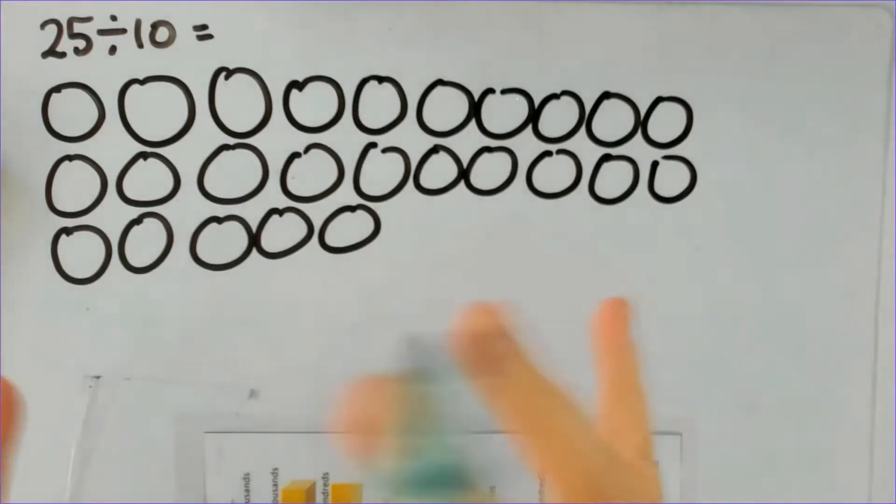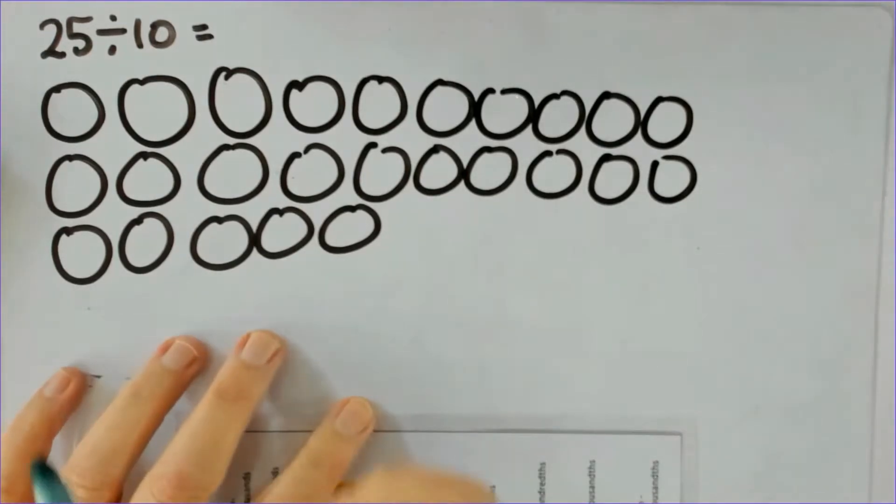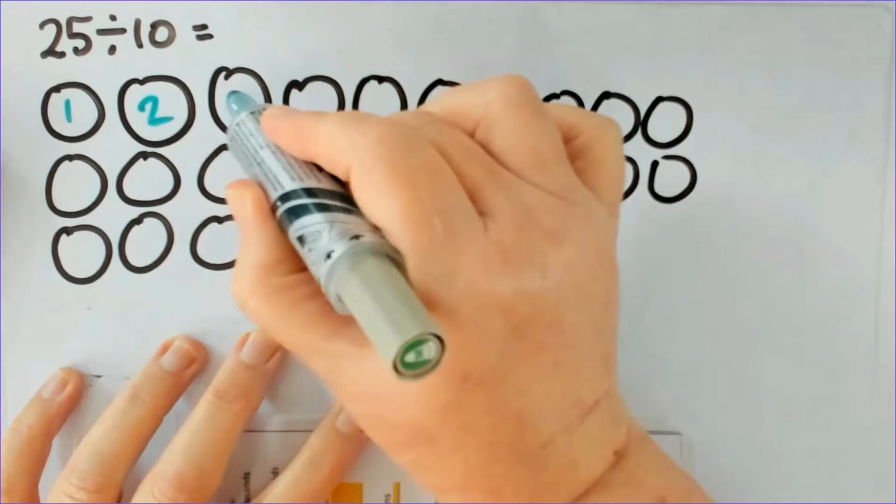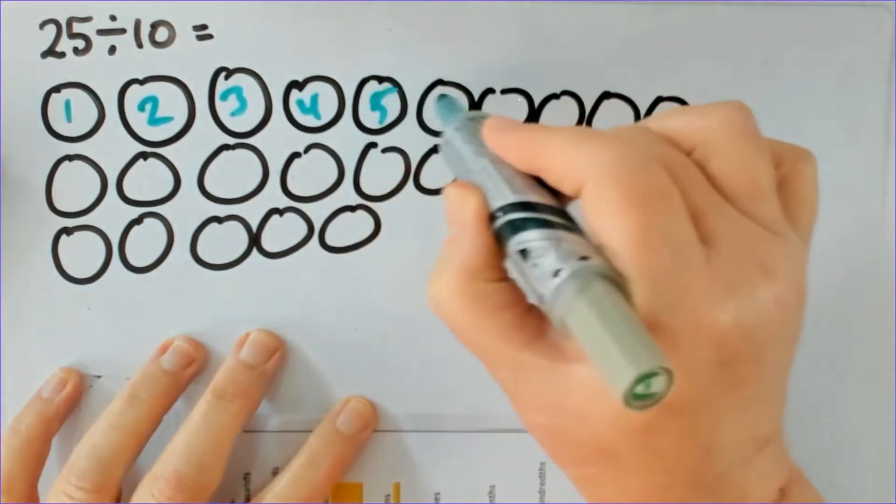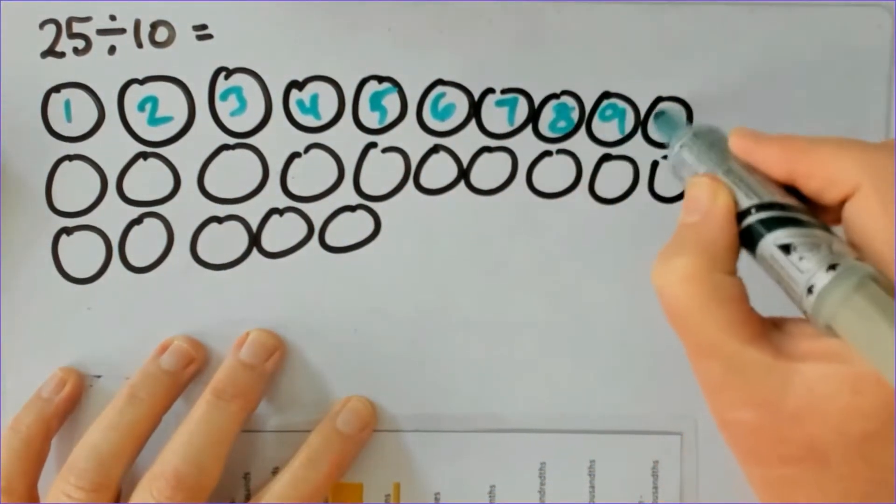So I'll give this to the students and I'll say can I give one pizza to each person? Yes I can, so the students will draw the numbers in each circle.